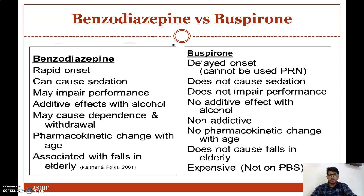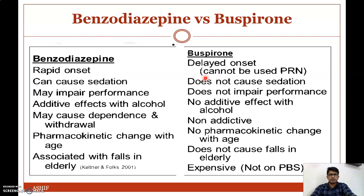An important question from this topic is: differentiate between benzodiazepines and buspirone. Benzodiazepines produce a rapid onset of action, whereas buspirone produces a delayed onset of action.